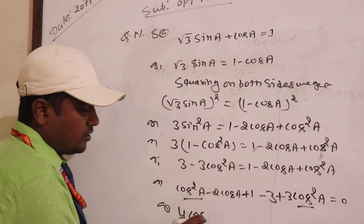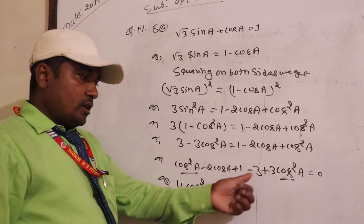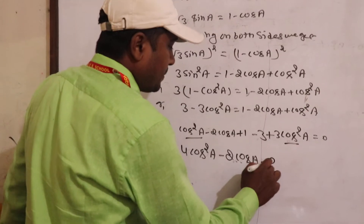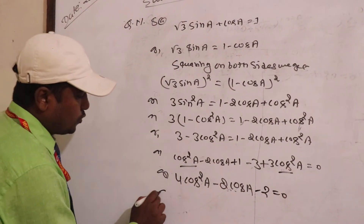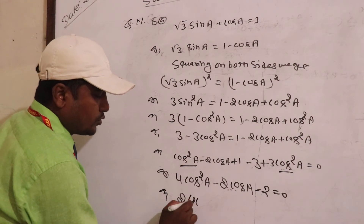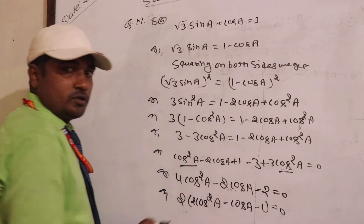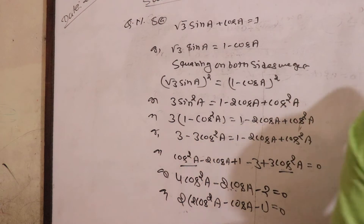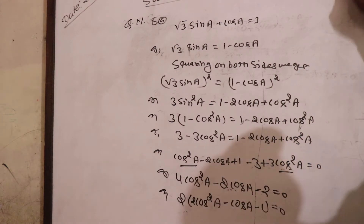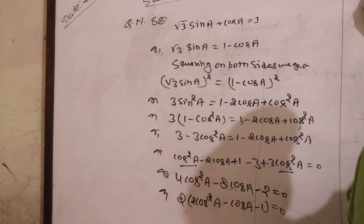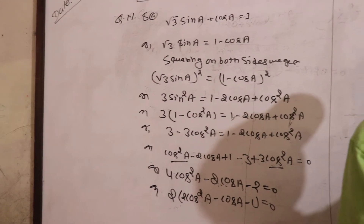So we get 4 cos squared A minus 2 cos A. Simplifying further: 2 cos squared A minus cos A minus 1 equals 0. Or: 2 cos squared A minus cos A minus 1 equal to 0.